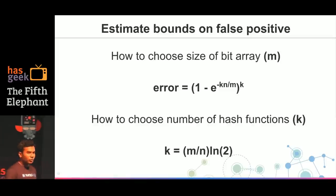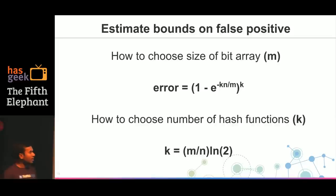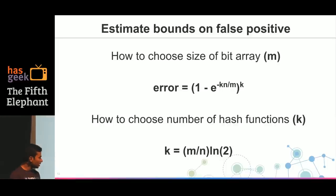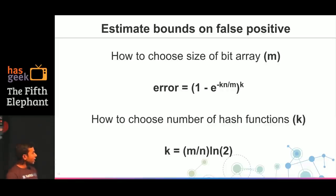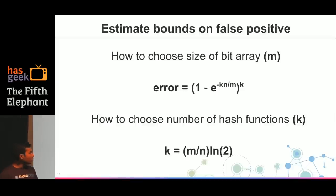Without going into the theoretical proof, let's jump to the results. To use this data structure you need three parameters: N, the total number of elements expected in the stream; M, proportional to the memory you can utilize; and K, the number of hash functions. You use the second formula to compute K first, then plug N, M, and K into the first formula to get the error. If the error is acceptable, you continue; otherwise you increase memory and iterate.